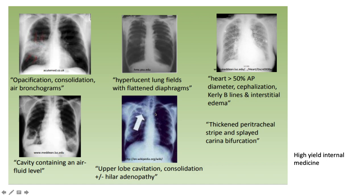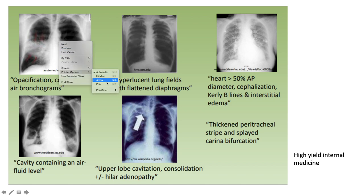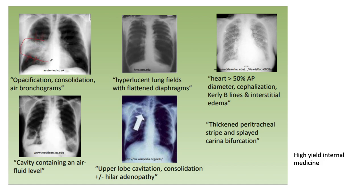Now let's cover some buzzwords in chest X-ray imaging. Any white area speaks to opacification. If it's dense and homogenous, it's most likely a consolidation or a mass. If you have air bronchograms — black areas going through the consolidation — that speaks to lobar pneumonia. Hyperlucent lung fields with flattened hemidiaphragms speak to obstructive airway disease, usually in the setting of COPD or asthma.